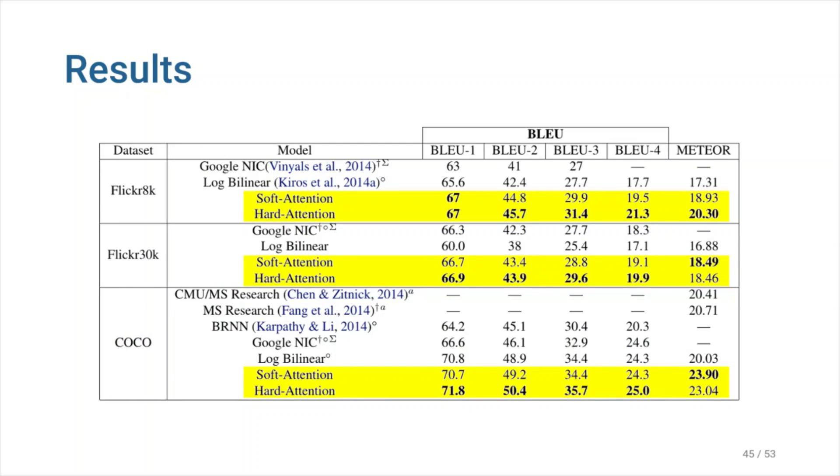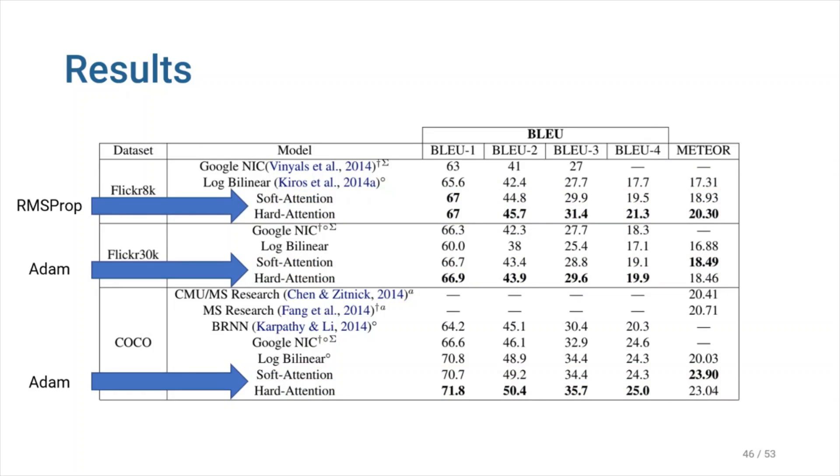We can see that the attention-based model introduced in this paper performs better than previous models in each and every dataset, on both blue score and meteor score. Both soft and hard variants of the attention model were trained with stochastic gradient descent using adaptive learning rates. In terms of optimization techniques, they used RMS prop for the Filker 8K dataset, and ADAM for the Filker 30K and Coco datasets. In addition to Dropout, the only other regularization strategy they used was early stopping on blue score.